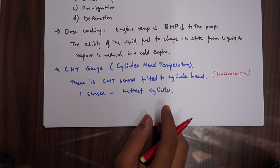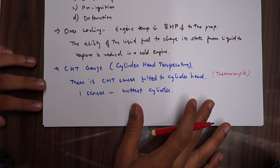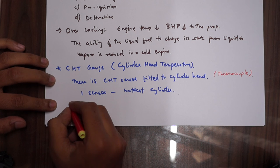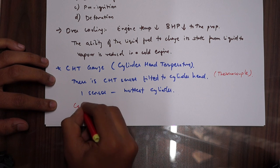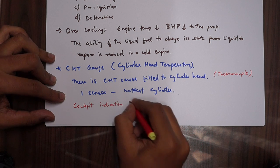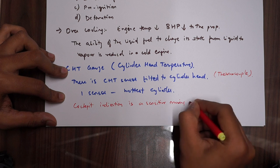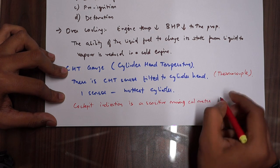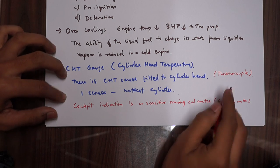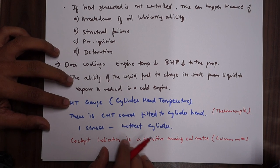As I told you, the sensor is a thermocouple. The principle of the thermocouple is basically it senses the temperature and produces a voltage that is proportional to the temperature and shows it in the instrument. The cockpit indication is a sensitive moving coil meter, this is called galvanometer. This thermocouple and galvanometer together help us understand the CHT temperature.